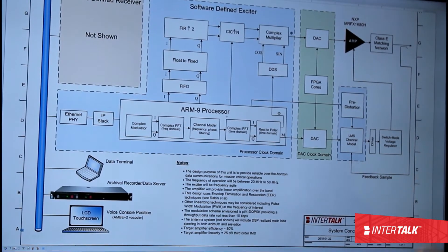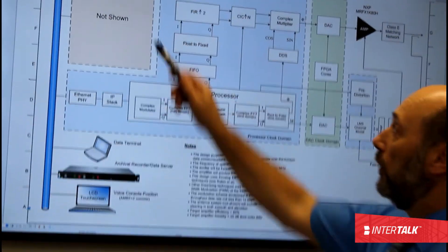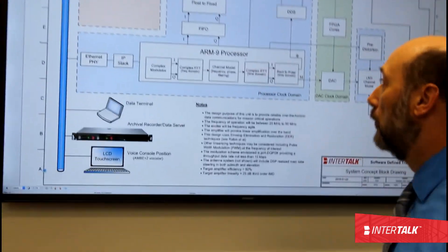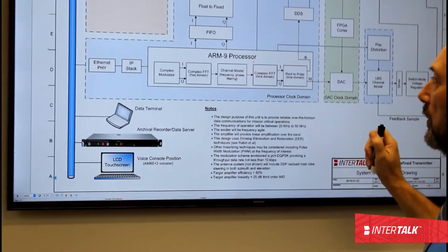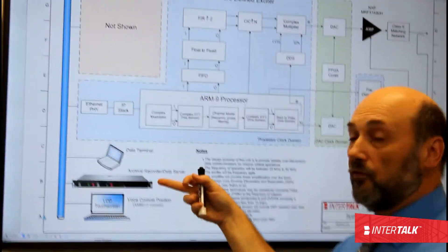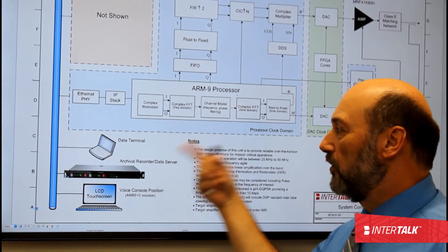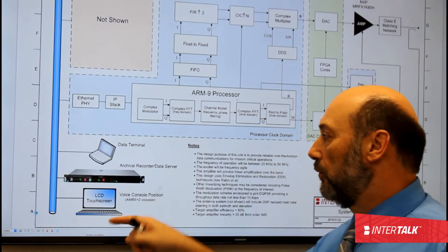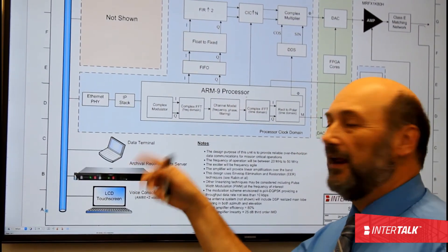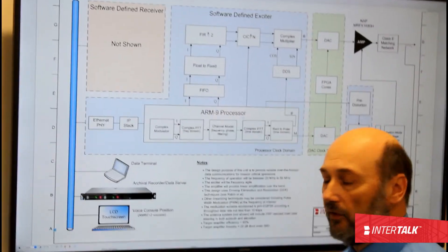So this is a block diagram of the exciter. As I mentioned to you before, the software-defined receiver, which is part of this project, we are not going to talk about right now. However, the exciter is pretty interesting. Essentially it is an IP connected exciter. So we can bring things back, for instance, for an archival recorder, and we can update it to the away team. We also have voice composition here using the AMBE plus two vocoder I talked about, and a data terminal, so we can have data communications with the people who are away from the vessel.